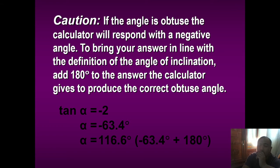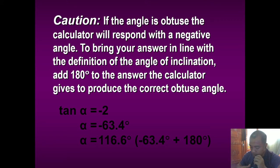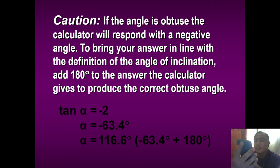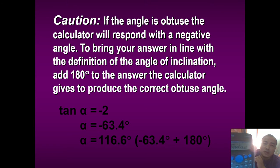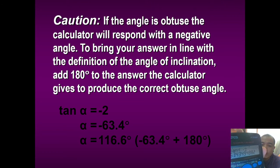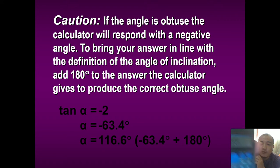For example, if the slope of the line is -2: press shift tan(-2) on your calculator. The result is -63.4 degrees. Since we get a negative angle, add 180 degrees to produce a positive angle: -63.4 + 180 = 116.6 degrees. So 116.6 degrees is the angle of inclination. Remember: if the calculated angle is negative, just add 180 degrees.